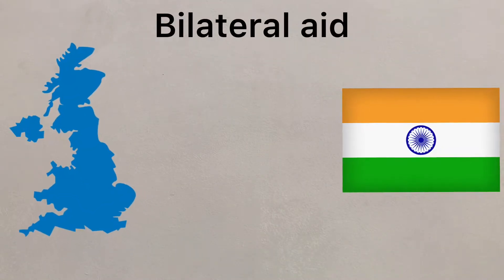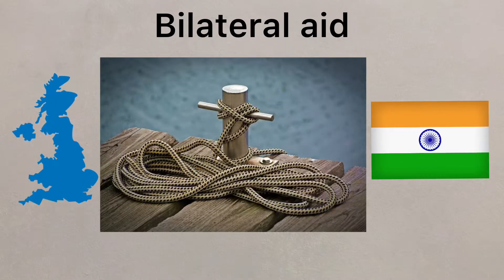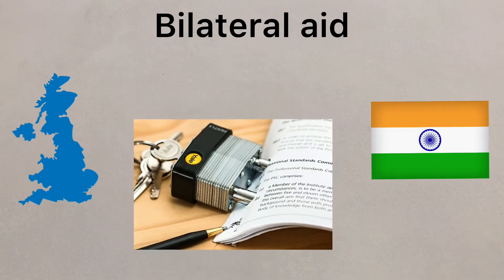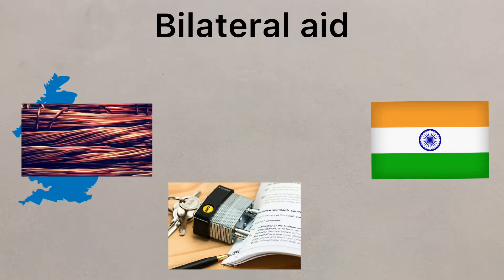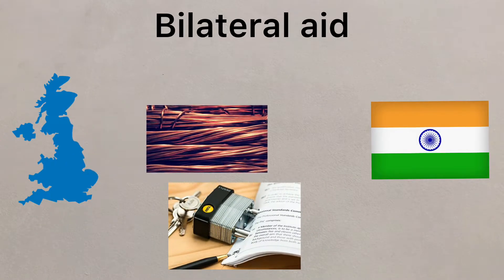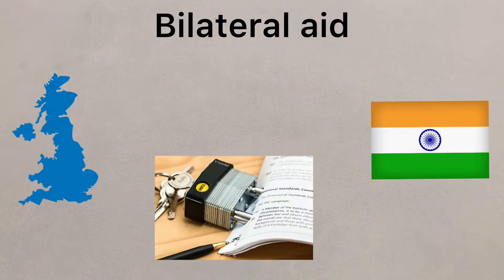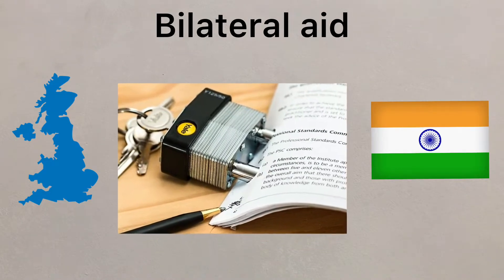Bilateral aid is between two countries, but can often be tied aid, where certain conditions are added to the agreement. For example, the recipient will have no choice but to spend the aid on products from the donor country. This can increase the wealth of the donor, but not always give the best value to the recipient.